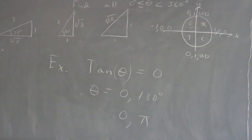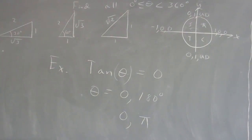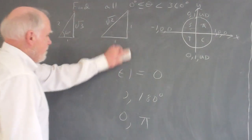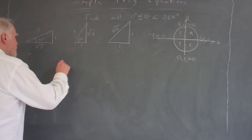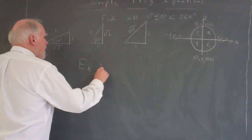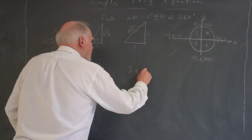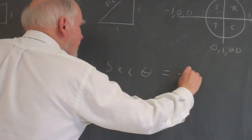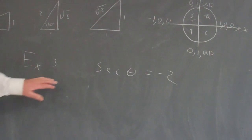Now let's do one more example. Let's do the secant of theta equals negative 2. This is example 3. The secant of theta equals negative 2.